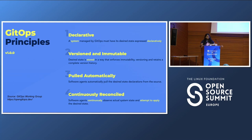The second principle is that desired state is stored in a way that enforces immutability, versioning, and retains a complete version history — so there's really no sneaking in a change. Third, software agents automatically pull the desired state declarations from the source. Fourth, software agents continuously observe actual system state and attempt to apply the desired state. That means you basically have something continuously looking at your code and actually applying it, so you don't have configuration drift.